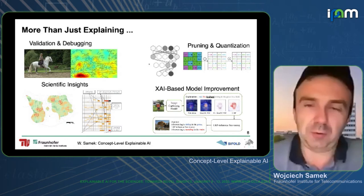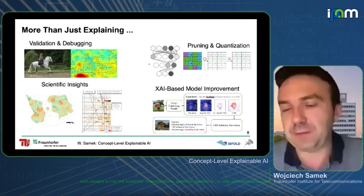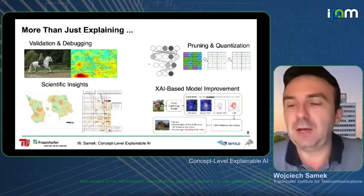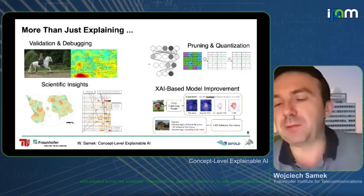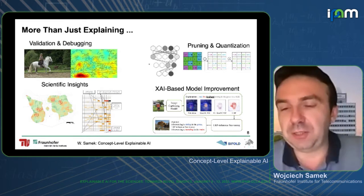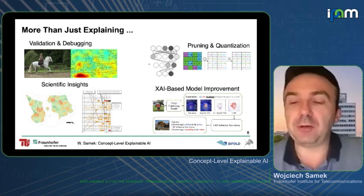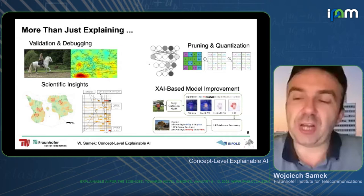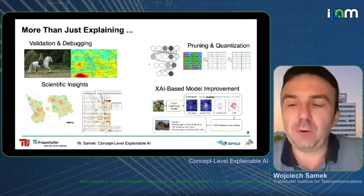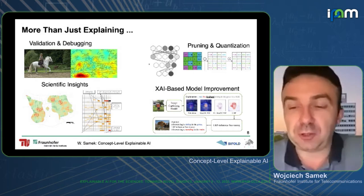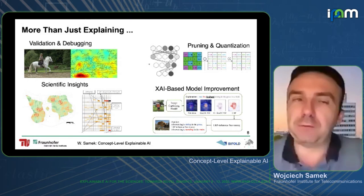Another category we looked at is integrating explanations directly into the model to improve it. In an image captioning model, we forced the model to ground the generated caption in the image. If the baseline model incorrectly said 'the brown dog is sitting in the grass,' we forced the model to check for every generated word whether there is positive evidence in the image for it. By adding this additional loss, we made the model generate better, more meaningful captions consistent with and explainable by the image.